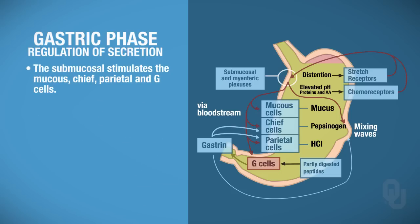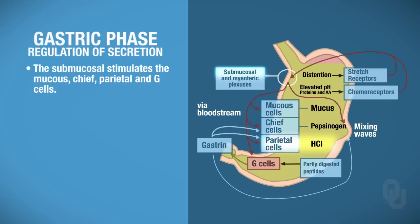Meanwhile, you have the submucosal plexus. That's going to stimulate mucus cells to synthesize and secrete mucus, stimulate chief cells to synthesize and secrete pepsinogen, stimulate parietal cells to synthesize and secrete hydrochloric acid, and stimulate G cells to synthesize and secrete gastrin. So gastrin, this hormone, is being produced by the stomach.